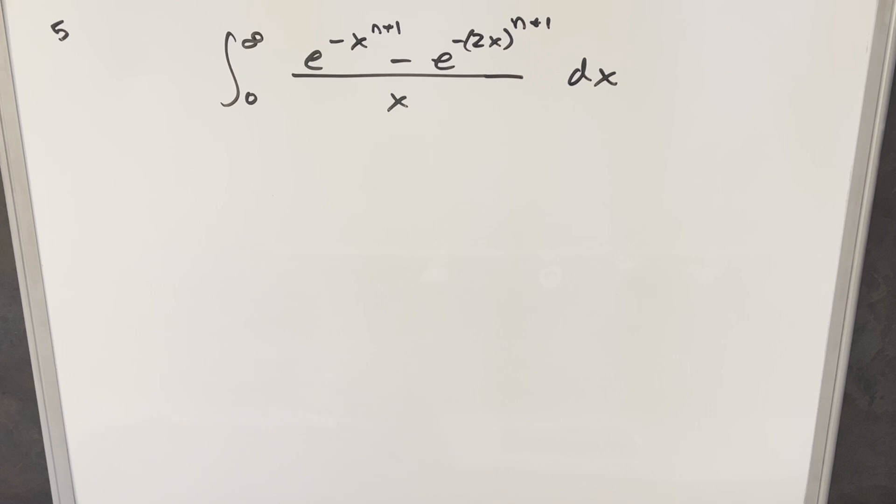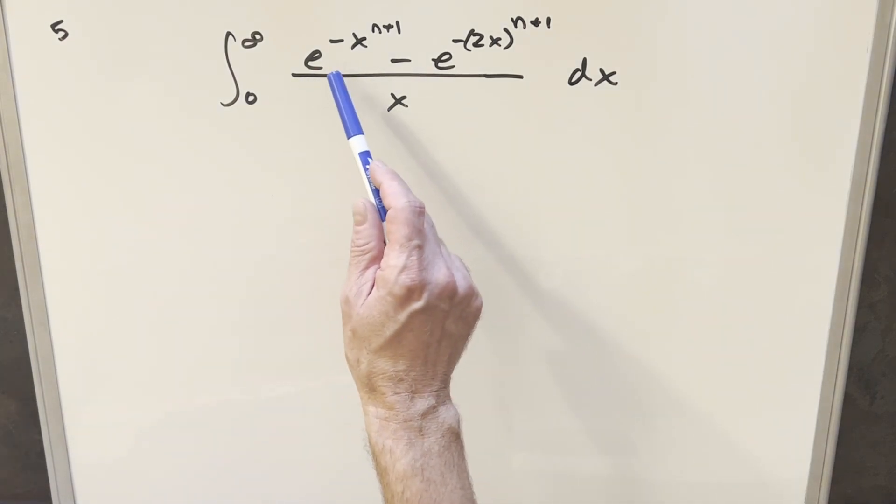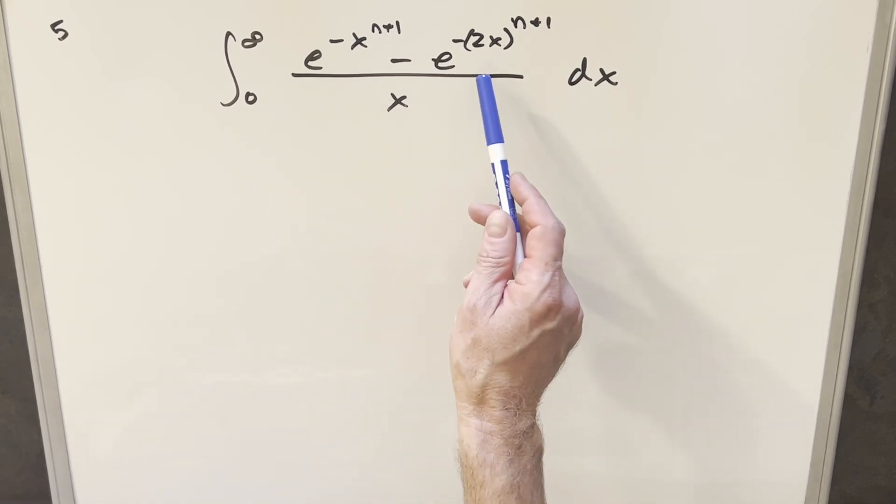I've done a few problems already kind of similar to this. We had one where instead of having e to the minus x to the n plus one here, we had an arctan. We've done it with sines, we've done it with cosines. I think this one's probably the most similar to the arctan case. We'll kind of go over some of the details of that at the end.